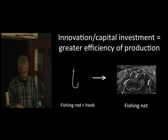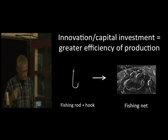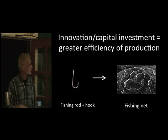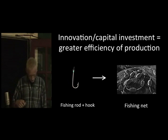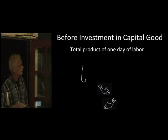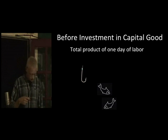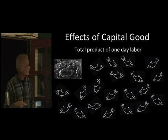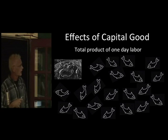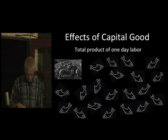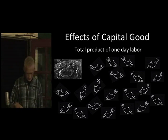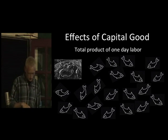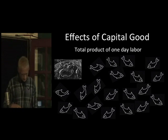A capital good is differentiated from a consumer good in that it is used not for consumption — since nobody likes eating fishing nets — but in the production of consumer goods, the fish. Once the capital good is finished, Huck puts it to use. We have his total production at the end of one day of labor without the capital good, and then his total production at the end of the day with the capital good. Now Joe could sell his fish at 90% off and still make the same amount of money with the same amount of labor as before.